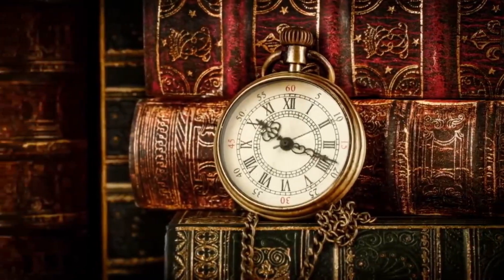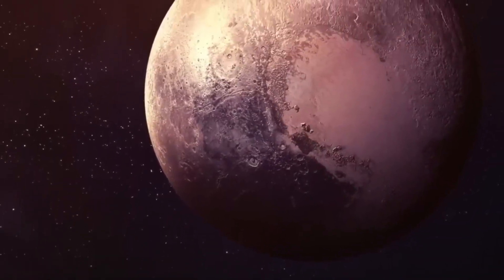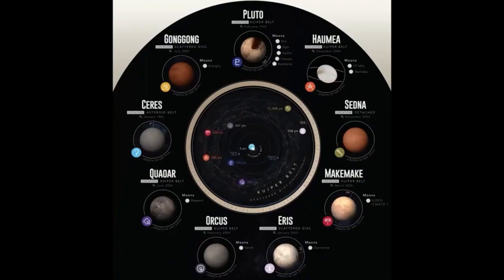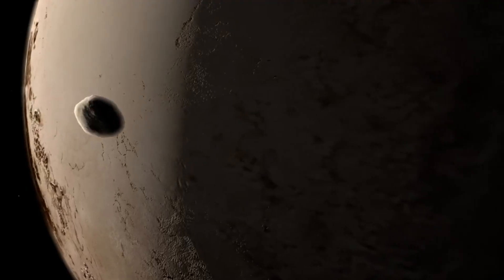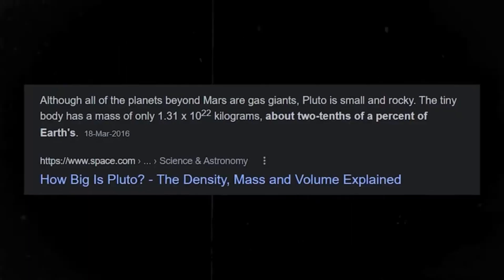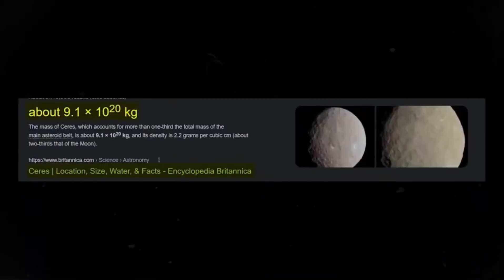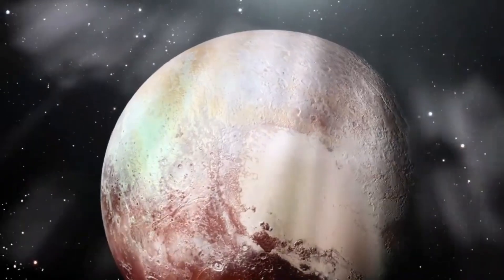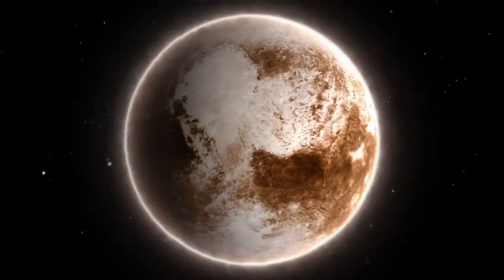The probe was able to transmit data from Titan's surface for just 72 minutes, but the information that could be obtained from this alone was extremely revealing. From an altitude of about 40 kilometers, the probe was able to take pictures of an incredible world. At first glance, the surface of the moon does not look too different from that of the Earth.